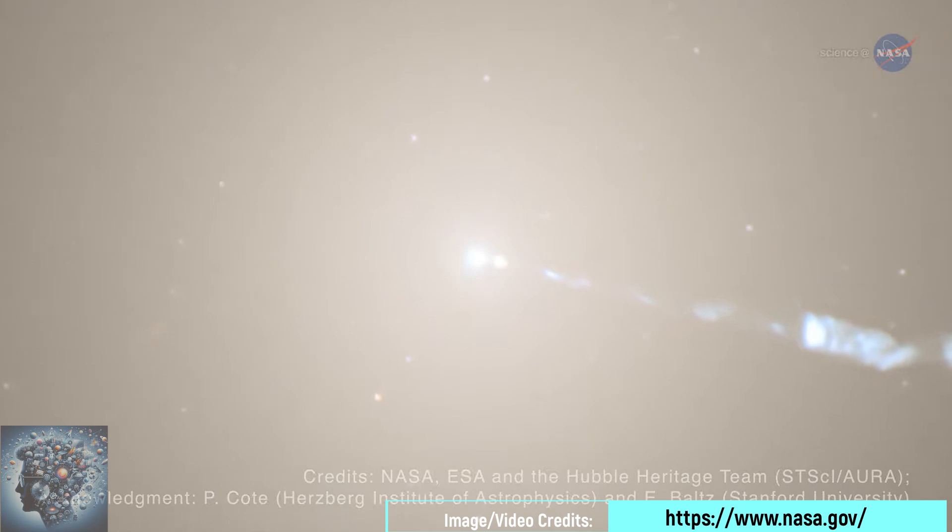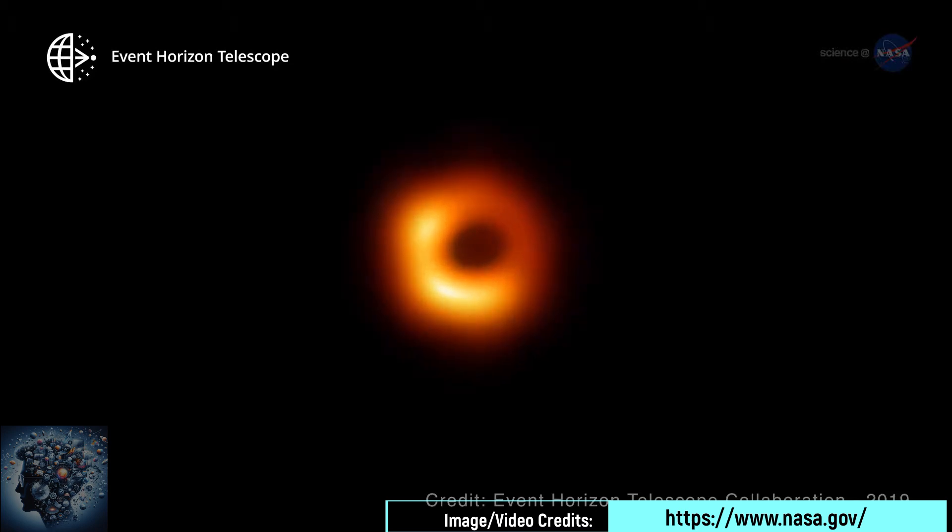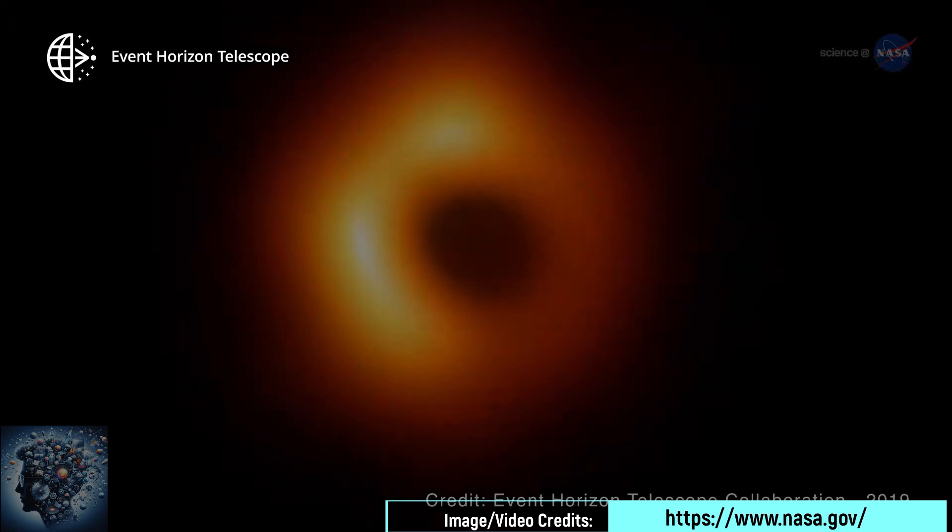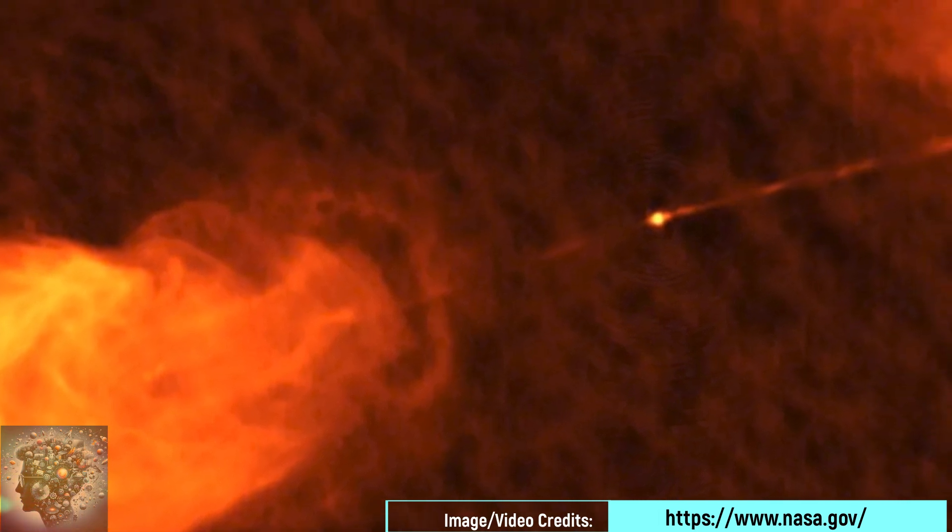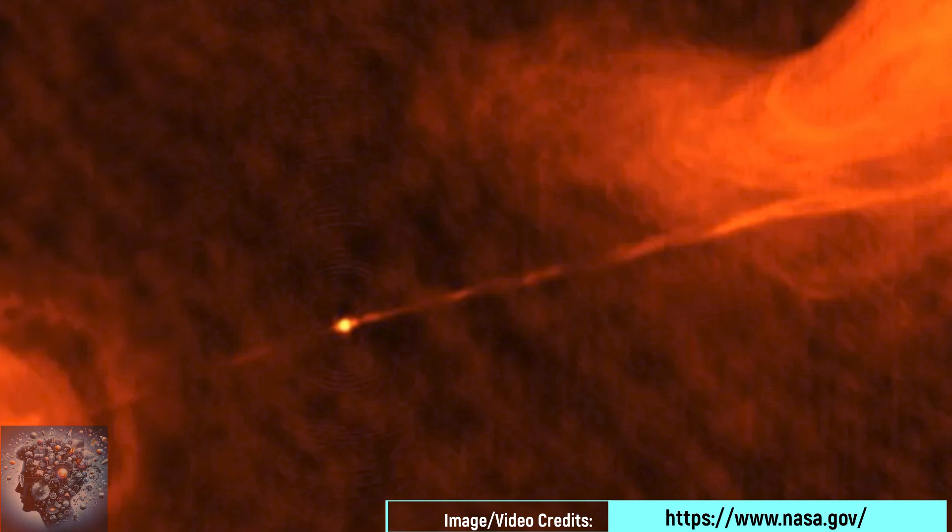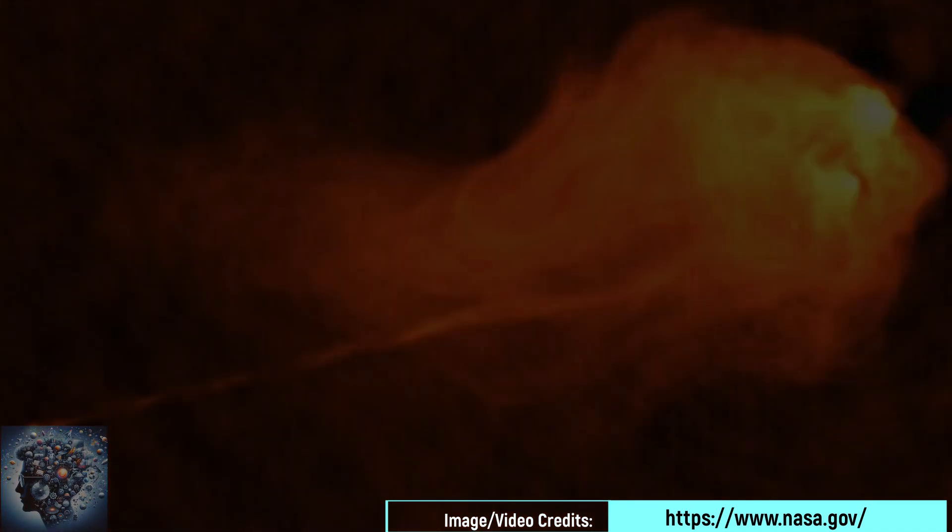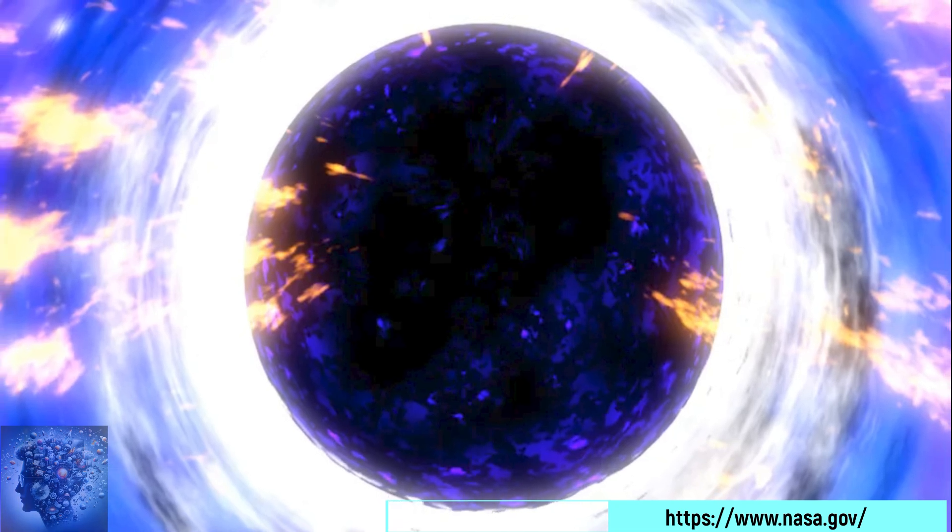A black hole forms when a massive star reaches the end of its life undergoing gravitational collapse. This occurs when the internal gravitational force of the star becomes unbalanced in relation to the radiation pressure resulting from nuclear fusion in its core. When this fusion ends, the star becomes unable to sustain its own weight, collapsing its outer part toward the core due to intense gravitational force.